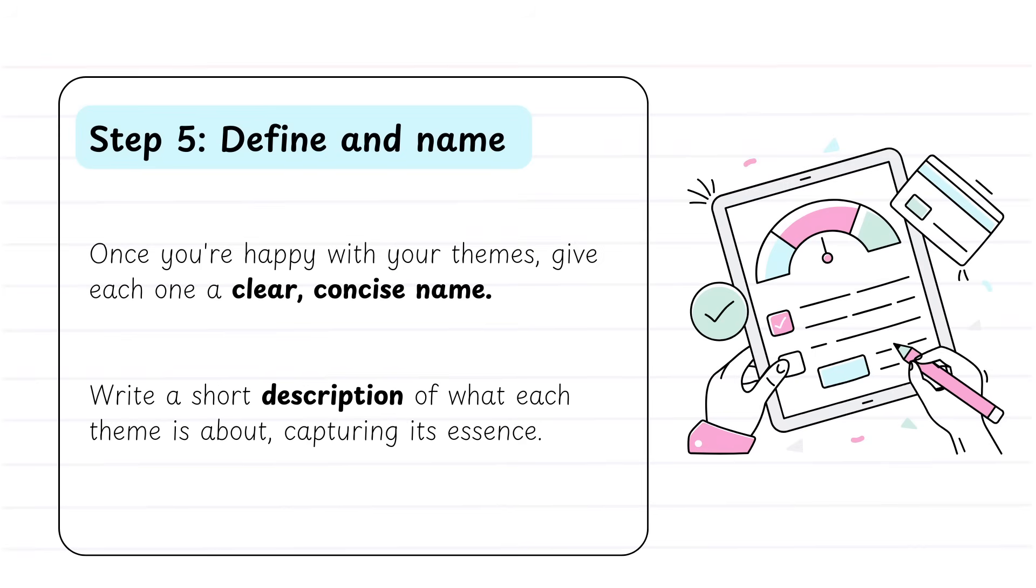Step five, now that we're happy with the themes that we have, we need to make sure that we've given that theme a very clear and concise name. Think of this, this is what your subheadings are going to be in your particular research piece, but you should also make sure you're writing a very short description about that theme to make sure that when you are writing it up, that your theme captures that.